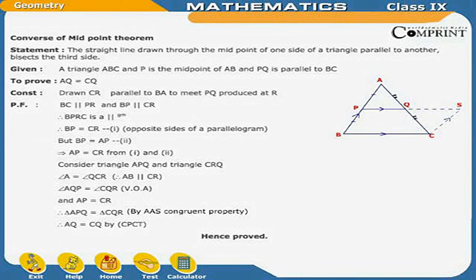Proof: BC is parallel to PR and BP is parallel to CR. Therefore, BPRC is a parallelogram. Therefore, BP is equal to CR — mark it as (1) — opposite sides of a parallelogram. But BP is equal to AP — mark it as (2). This implies AP is equal to CR from (1) and (2).